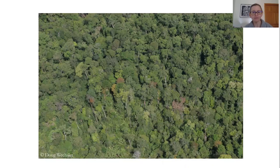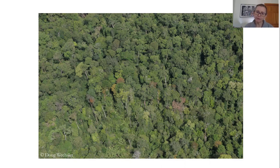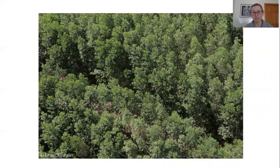This is an aerial view of a lowland dipterocarp rainforest in Sarawak, East Malaysia on the island of Borneo. These forests hold thousands of species, many of which are still undescribed, and the bird community in these environments is very rich. By contrast, this is an aerial view of Acacia mangium, which is a monoculture exotic tree used for timber.